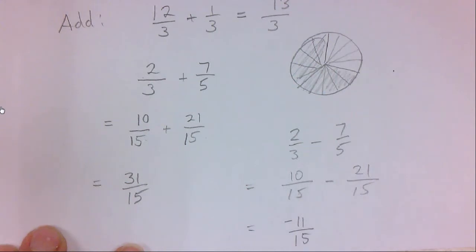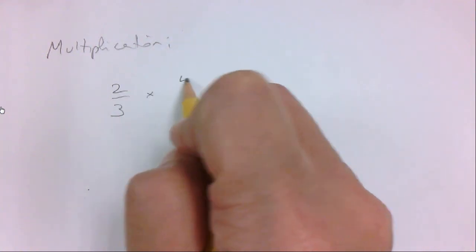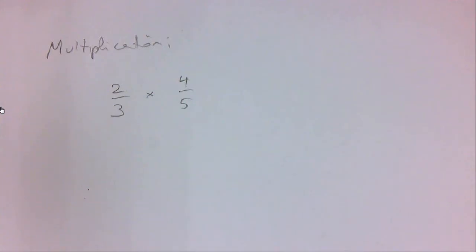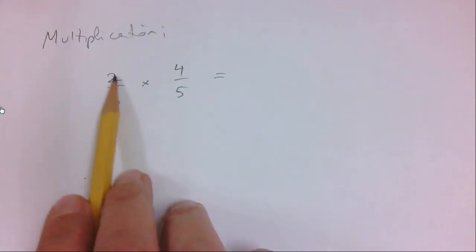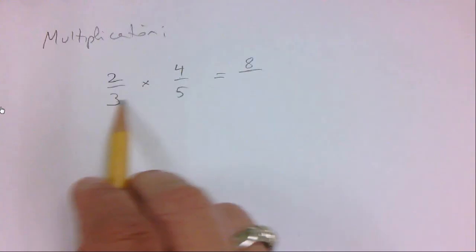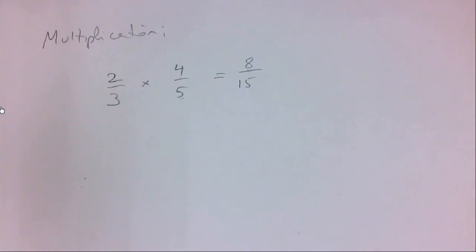Let's do multiplication and division. So multiplication is easier than adding and subtracting. I'm going to take two fractions, two-thirds, and I multiply by 4 fifths. All you do with multiplication is you multiply straight across. So two times four is eight. Three times five is 15. Done.